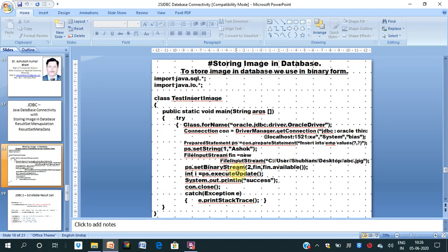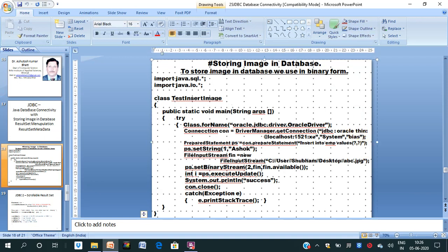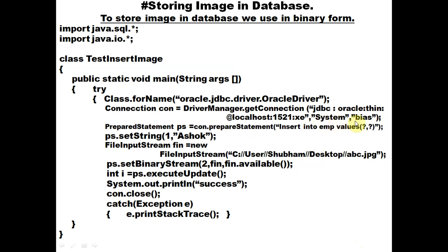The connection string uses jdbc:oracle:thin with localhost, port number, user ID, and password. These two statements were defined in the previous lecture. The third statement is a PreparedStatement with object 'ps', created using connection.prepareStatement. This method is under the Connection class, and c1 is the object of the connection. This will execute an INSERT command: insert into the employee table values with two question marks for user input.